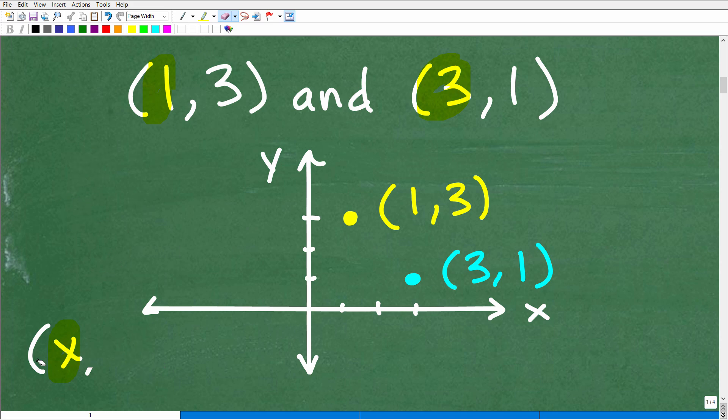You need to know how to write the ordered pair, the x-y point, and plot points - all really basic stuff. Here is the point (1,3). If I plot it, it's 1 on the x-axis, 3 on the y-axis, so it would be right here. And the point (3,1) would be right here, 3 on the x, 1 on the y.